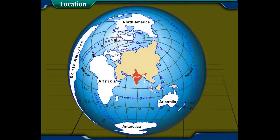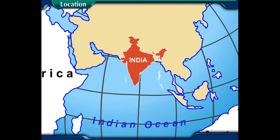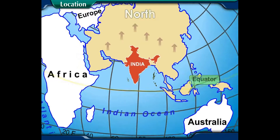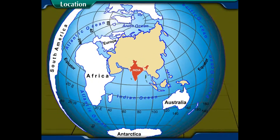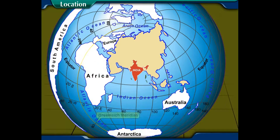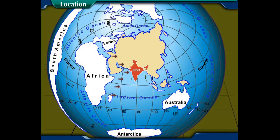If we observe the globe, it will be evident that the mainland of India and its islands are to the north of the equator. It is also on the eastern side of the Greenwich Meridian. This means India is located in the northern and the eastern hemispheres.